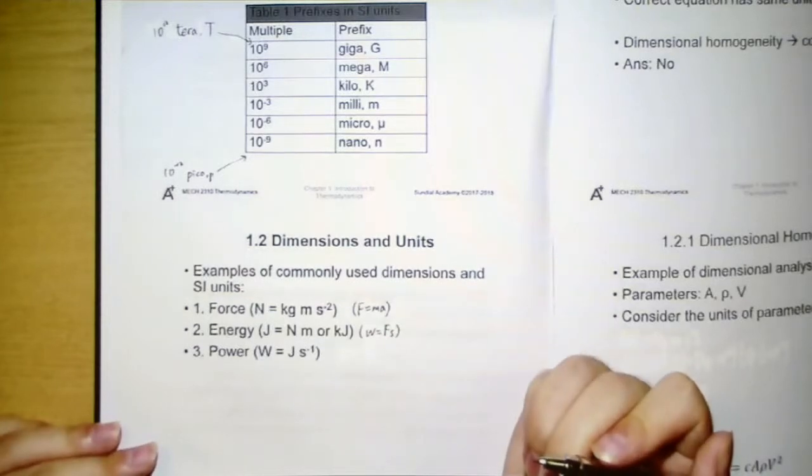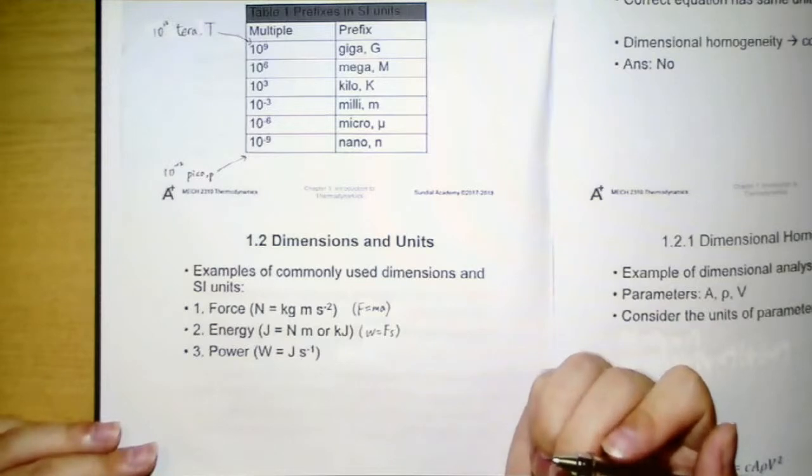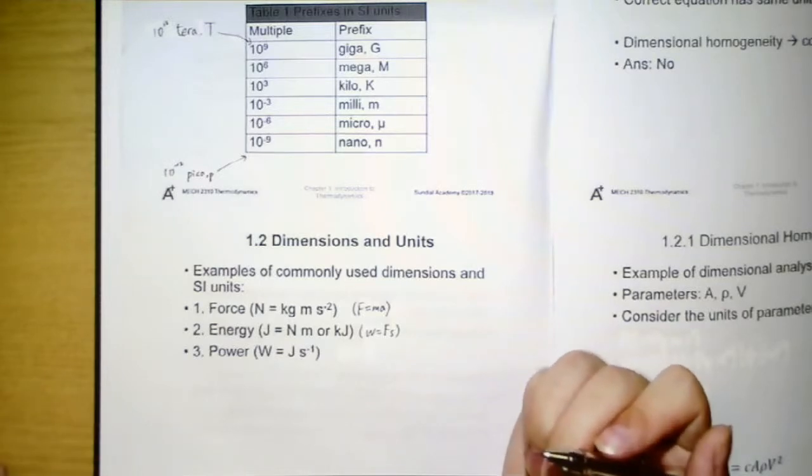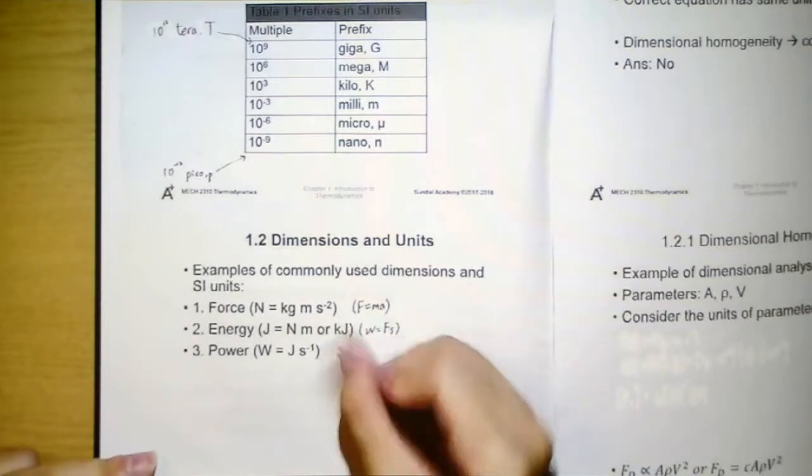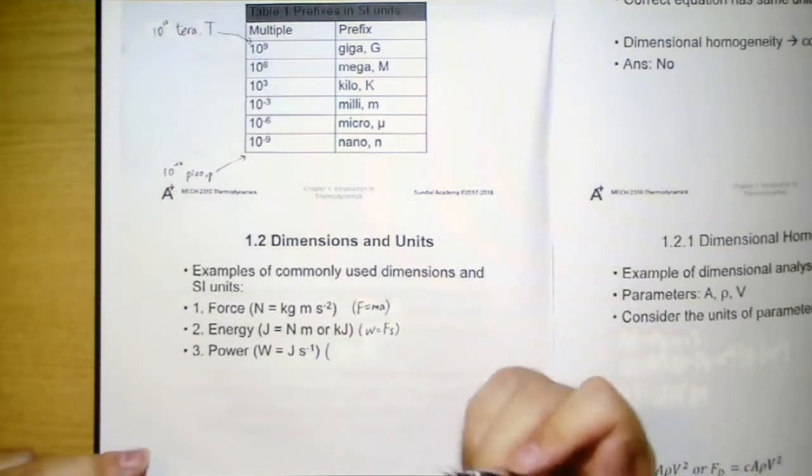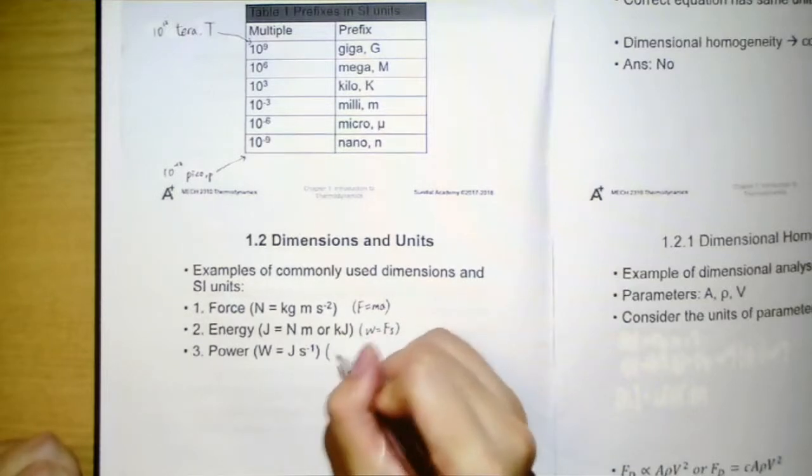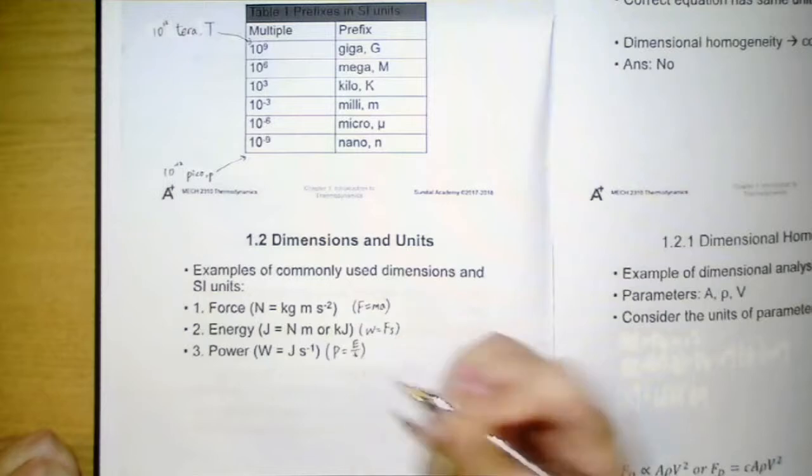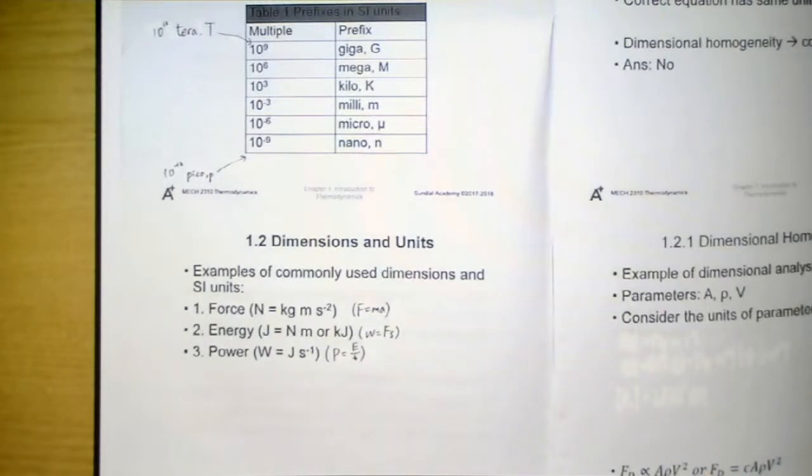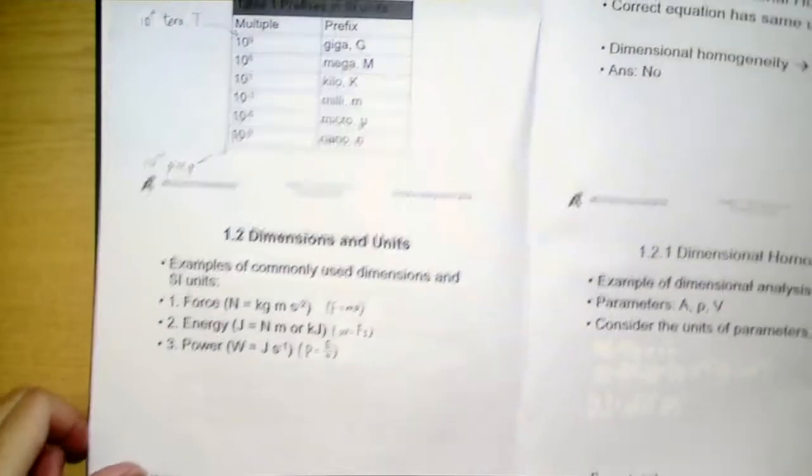The third one would be power. The SI unit is watts. It will be equal to joule per second. And it is also from a relationship that you should have learned in elementary mechanics, that is power equal to energy divided by time.